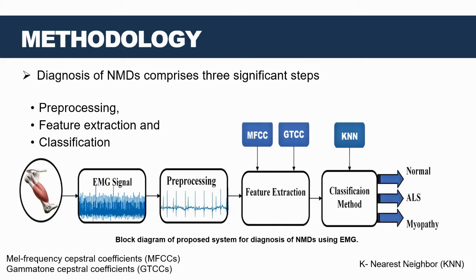Next comes our methodology. Our methodology for NMD classification comprises three key stages: preprocessing, feature extraction, and classification. We begin by preprocessing EMG signals using a fourth-order elliptic bandpass filter with a cutoff frequency of 20 Hz to 10 kHz. The signals are then divided into non-overlapping segments of one second for targeted analysis. Feature extraction involved calculating the MFCC and GTCC features. Finally, the extracted feature matrix is trained on multiple classifiers at the classification stage.